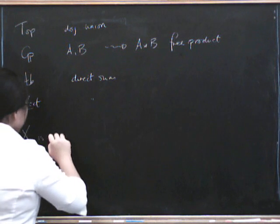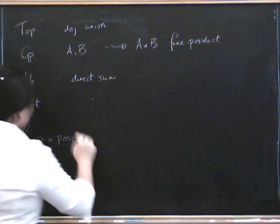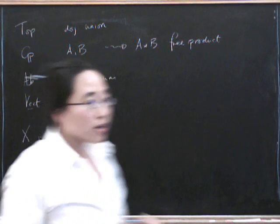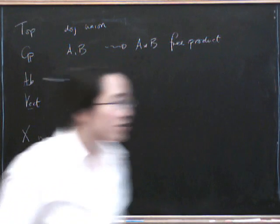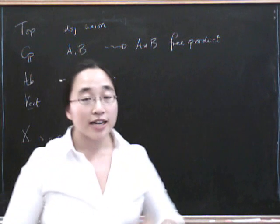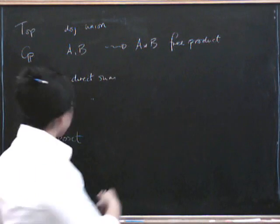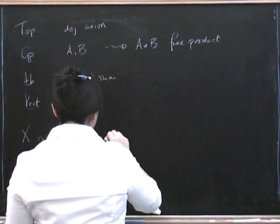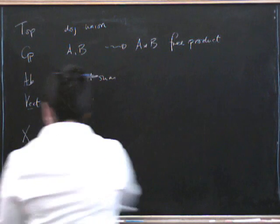So, what else did we have? Oh yes, we had, if X is a poset, last time we had that products were greatest lower bounds, GLBs.